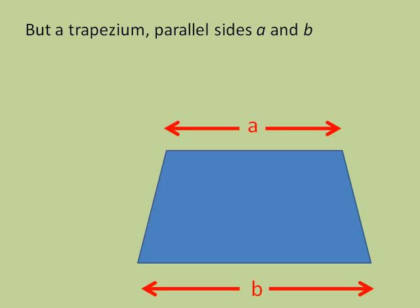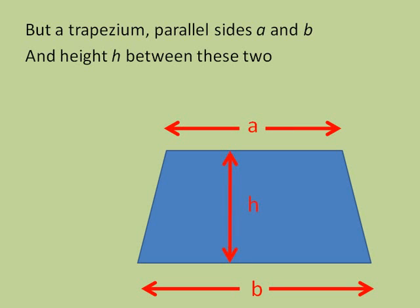But a trapezium, parallel sides A and B, and height H between these two, its area A equals A plus B times H all over 2. Don't forget to add your brackets too.